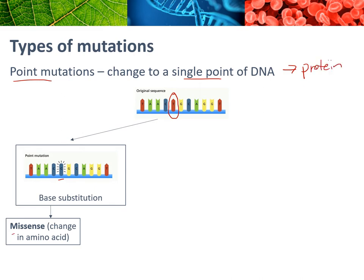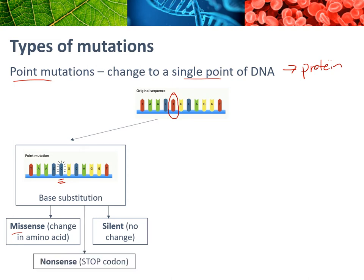A missense mutation is when that changed base will result in a different amino acid — so instead of getting one amino acid you get a different one. You can have a silent mutation when, even though there's a change in the base, it still codes for the same amino acid, so that won't affect the resulting protein. You can also get a nonsense mutation, which is when that new base ends up coding for a stop codon, meaning the protein will be cut short at whatever point in the gene where that mutation occurred.